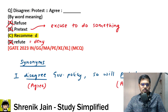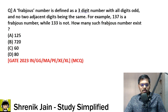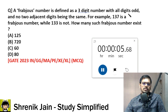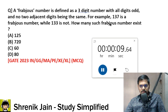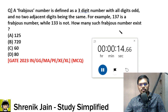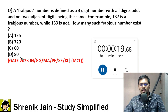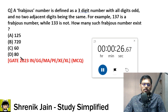The next question is very tricky — be cautious while solving it. A fraptious number is defined as a three-digit number with all digits odd and no two adjacent digits being the same. For example, 137 is a fraptious number while 133 is not. How many such fraptious numbers exist? Options A, B, C, or D. Some students say this is a permutation-combination question and very easy — you can solve this in 45 seconds.